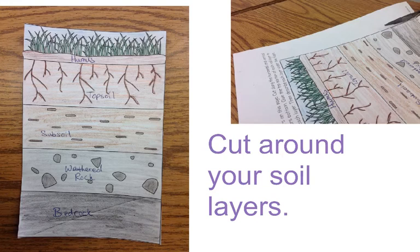Now you're going to cut this layer out. You're going to cut around your soil layers so that you can see it looks like it does in this picture. So you have all the border gone.